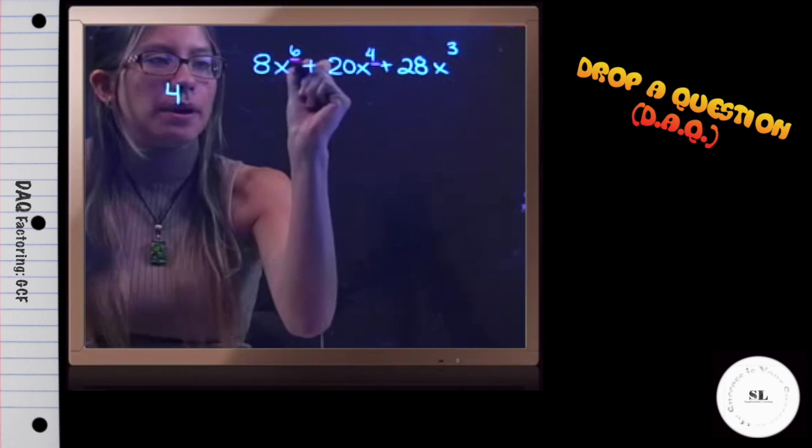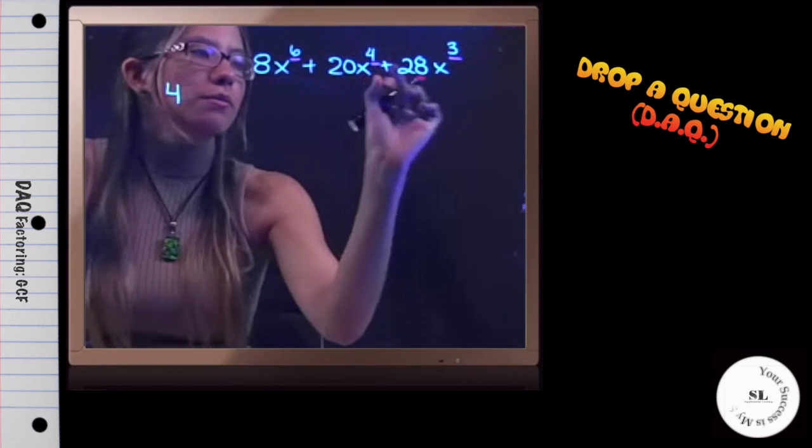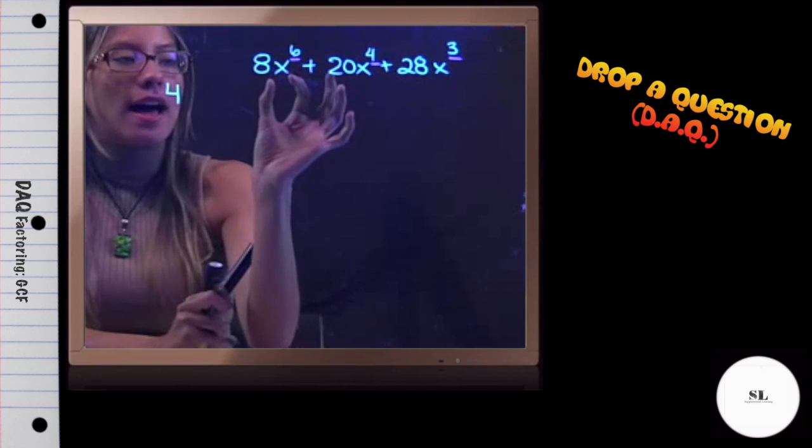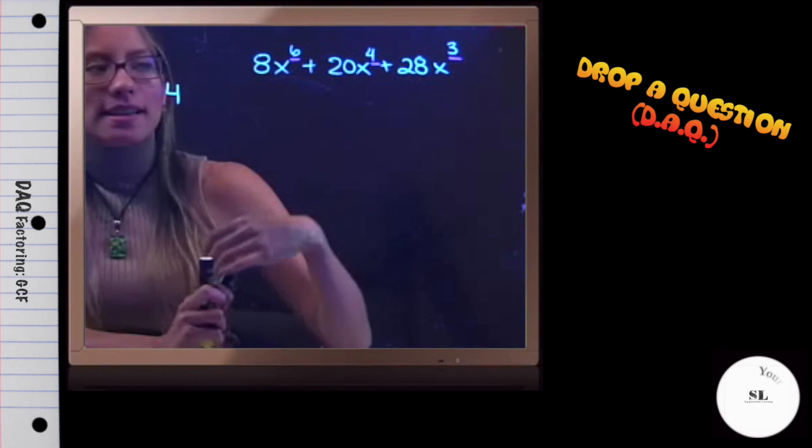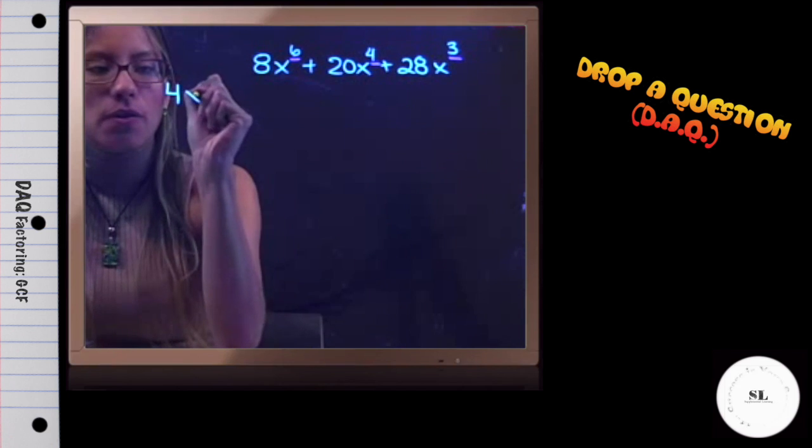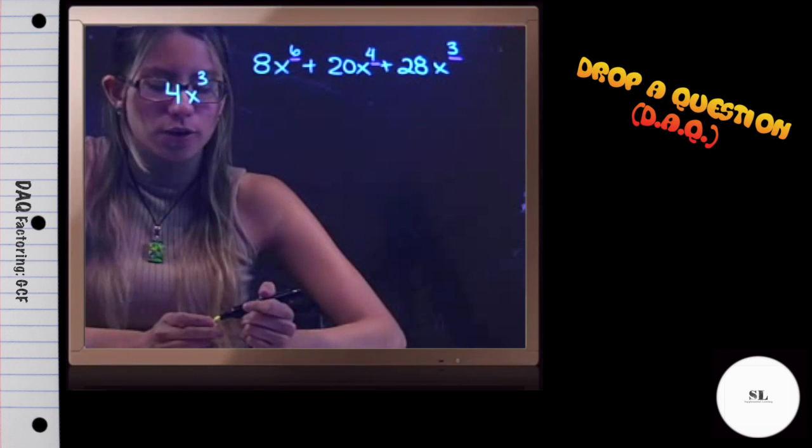The lowest exponent is 3, not 4. So they all have at least 3 x's in common, which means we're also going to pull out not just the 4, but 3 x's, and we write that as x^3.